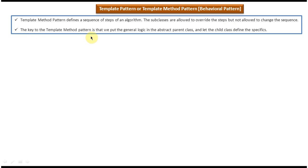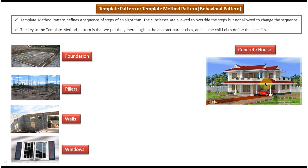Let's see one example so that you will understand this explanation very clearly. Suppose I want to build a concrete house. Then what I have to do is: first I have to build a foundation, second I have to build pillars, third I have to build walls, and fourth I have to build windows. I have to follow this sequence of procedures in order to build a concrete house.